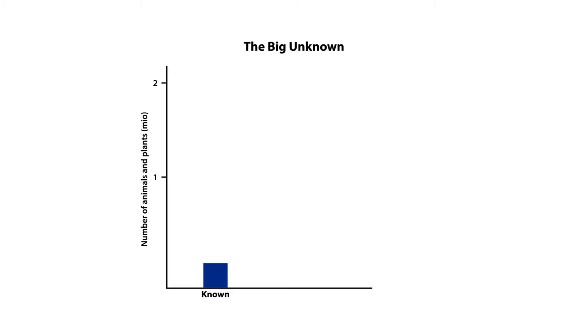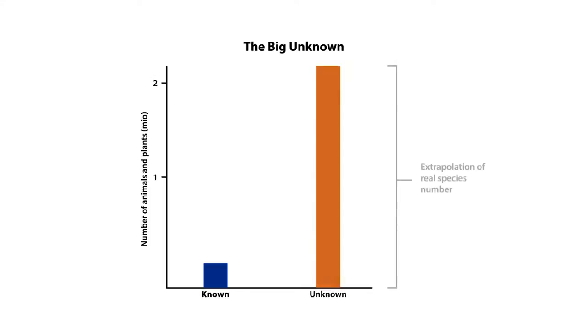Currently scientists only have a very incomplete inventory of species living in the oceans. If we count only macroscopic, multicellular animals and plants, about 250,000 have been described by scientists. But we know we have not sampled all of them — at least a million await scientific discovery and description, let alone an analysis of their function within ecosystems.